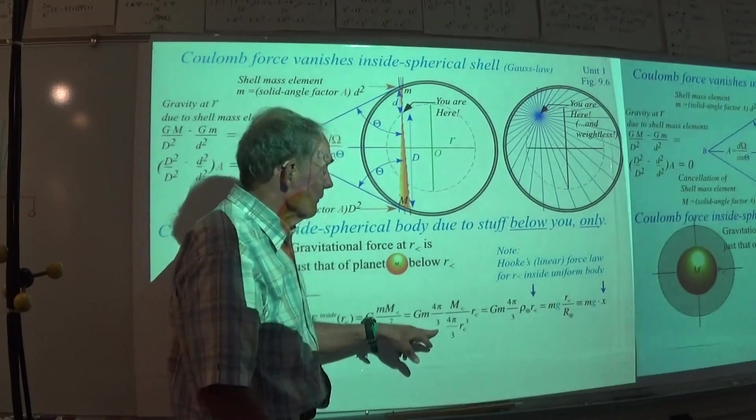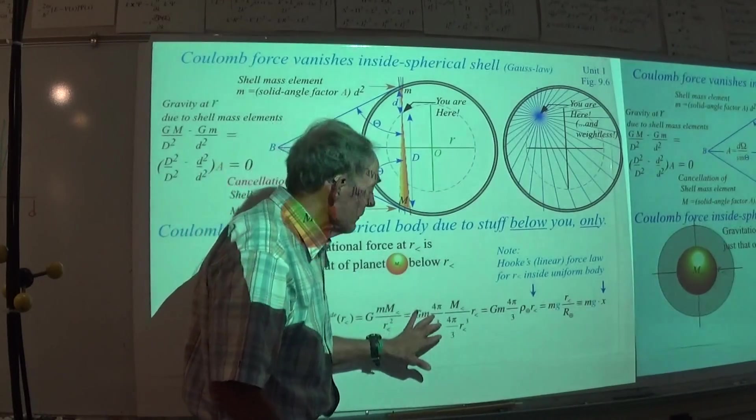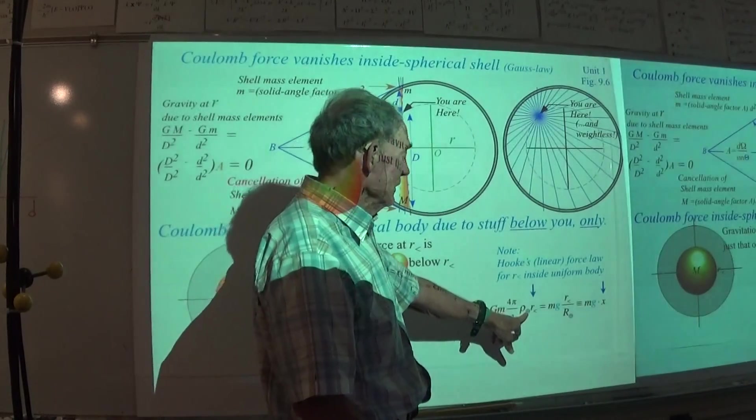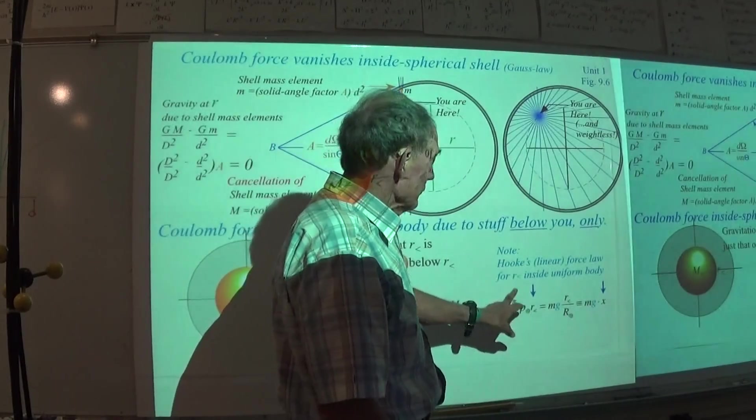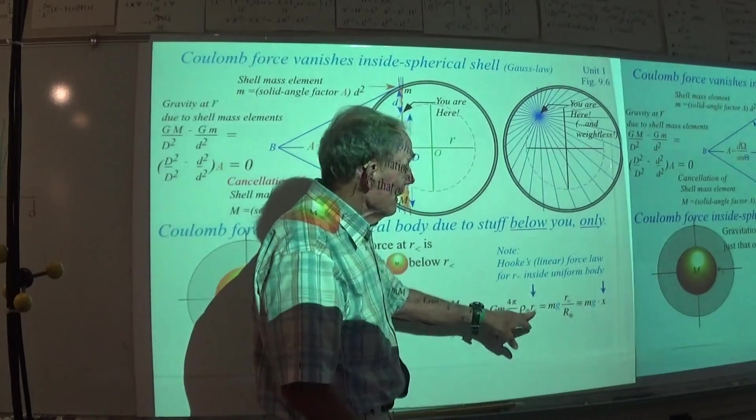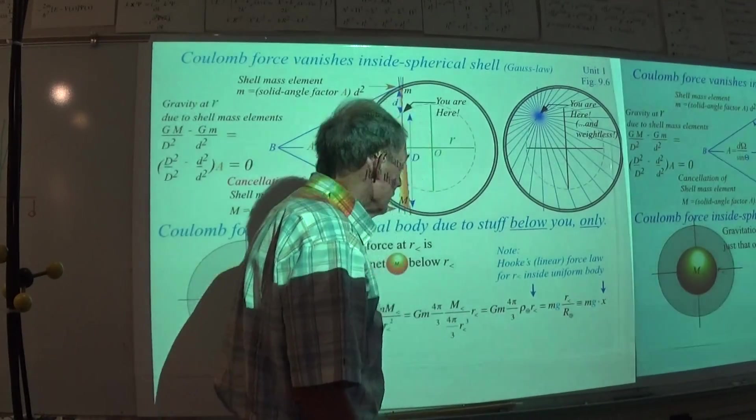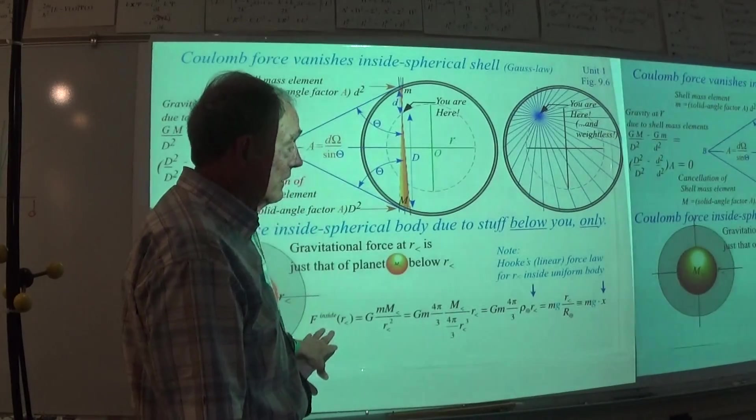You put a 4 pi over 3 in the numerator and denominator. Now you're talking about the volume, so you can put this in terms of the density of the Earth, modulo 4 pi over 3, and that's the equation that you'll have for the force inside that.